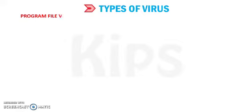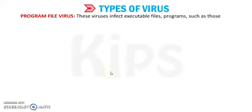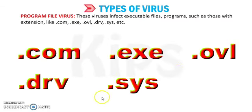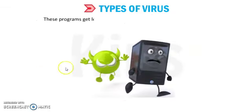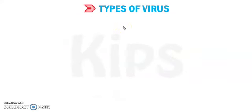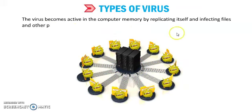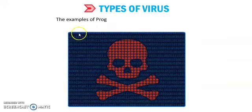The next type is program file virus. These viruses infect executable file programs, such as those with extensions .com, .exe, .ovl, .drv, and .sys. These programs get loaded into computer memory during execution. The virus becomes active in memory by replicating itself and infecting files and other programs on the disk. Examples of program file viruses include Sunday, Cascade, and Alien.